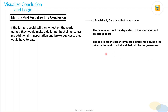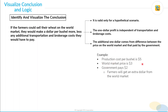To understand this third point, let's take an example. Let's say production cost per bushel is $5 and world market price is $3 — so the world market price is already below the production cost. However, the government pays $2. In that case, farmers will get an extra dollar from the world market. So even if they are not making a profit overall, by selling to the world market they will earn one extra dollar. From here, we can see that production cost is not relevant.